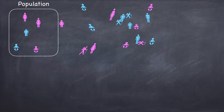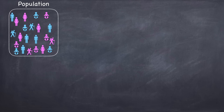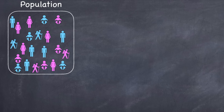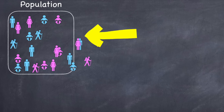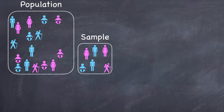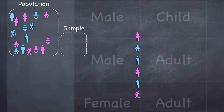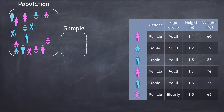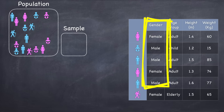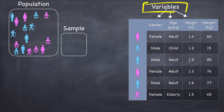Let's imagine that we have a research question about the height and the weight of people living in Ireland. Of course, we can't measure the height and weight of the entire population, so instead we take a random sample and measure the weight and height of that sample. We collect some additional information, like gender and age group, and we arrange these data in a spreadsheet or data set with the various attributes in columns. These are called variables, and they will be the object of our inquiry.